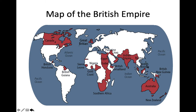This is a map of the British Empire. As you can see, it expanded to many parts of the world, starting from Canada and through the middle part of the world, that is characterized by Africa, and then to Australia. Malaysia is also colonized by the British.